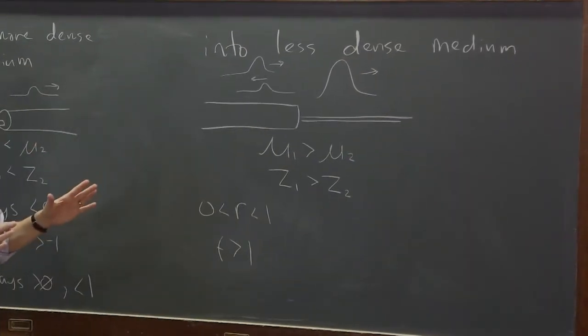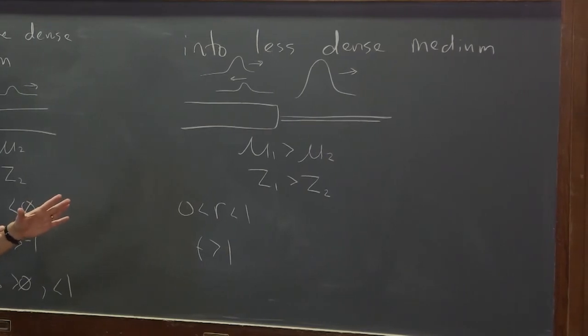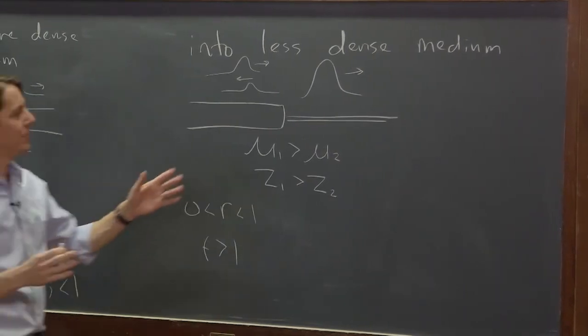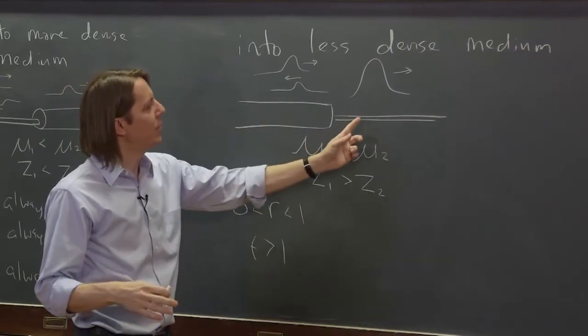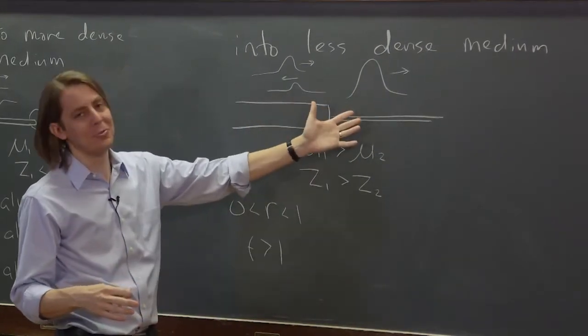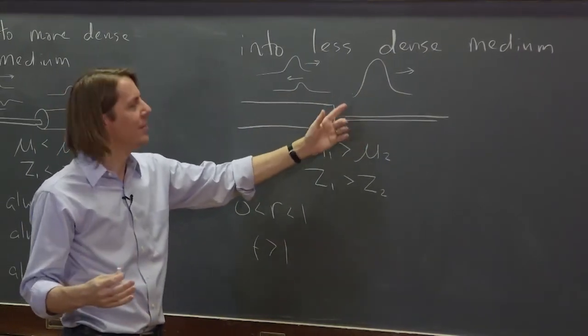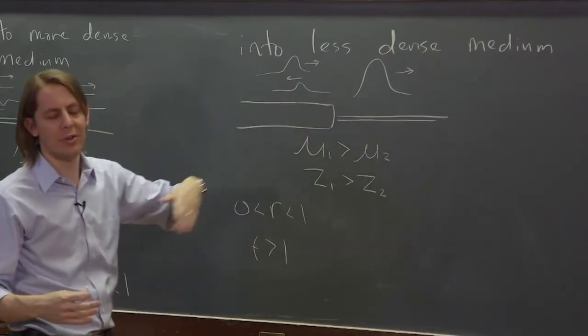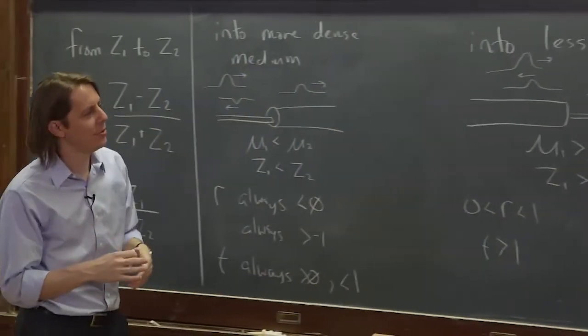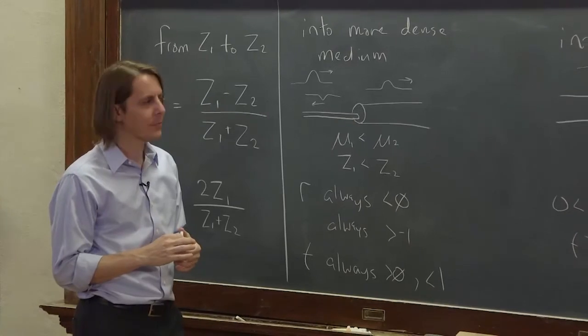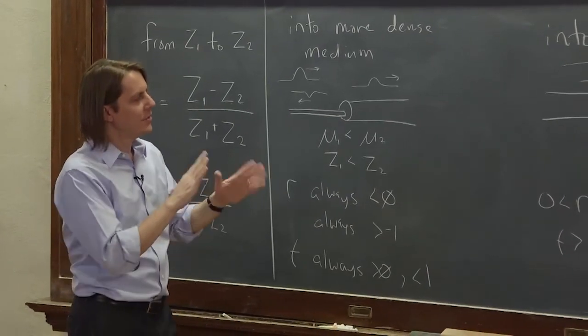And it might look like you haven't conserved energy, but you have, because we haven't talked about the energy in a wave for strings. Although this has a bigger amplitude, we haven't conserved amplitude, but you don't conserve amplitude, you conserve energy. So there's a bigger amplitude, but it's a less dense string. So if we were to think about the energy, it would work out. So that's essentially what happens.